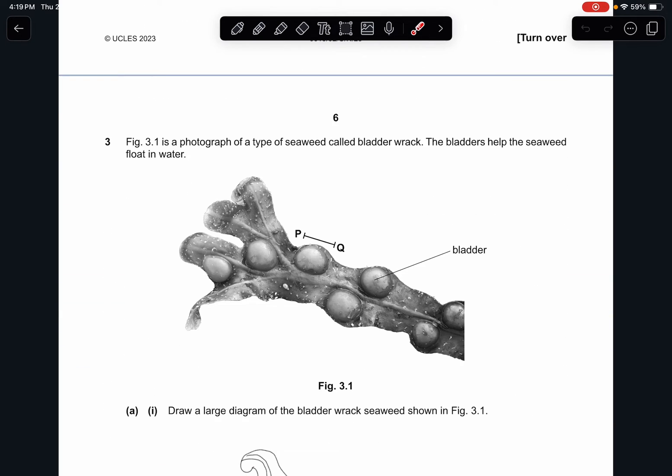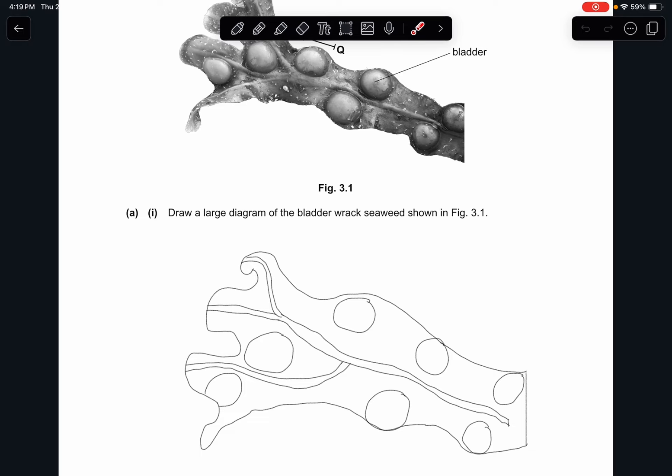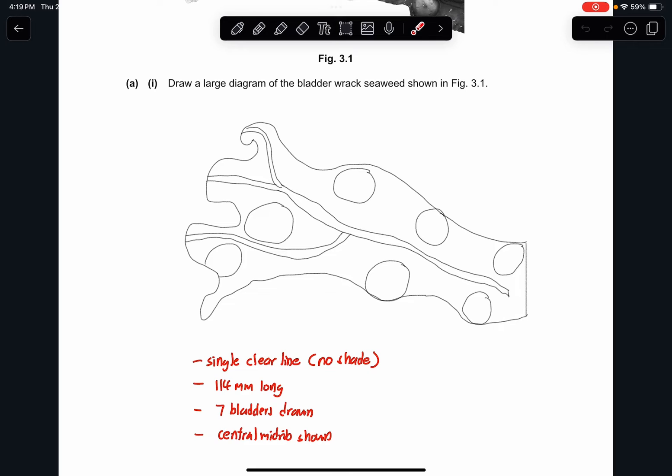Question 3. Figure 3.1 is a photograph of a type of seaweed called bladder wrack. The bladders help the seaweed float in water. Part A1, draw a large diagram of the bladder wrack seaweed shown in figure 3.1. I just did a rough sketch. It's not that good because it's on iPad. If you draw on paper, it would be much better. How is it being assessed? It's by a single clear line with no shade, about 114 millimeters long. And about 7 bladders are drawn, which is here. And a central midrib attached to the two ends, which is actually here. Draw this midrib. It's in the middle. It's kind of like a stem, but it's called midrib.